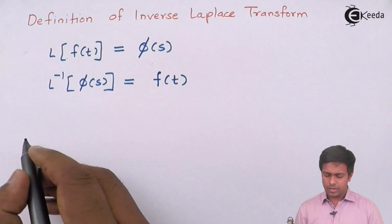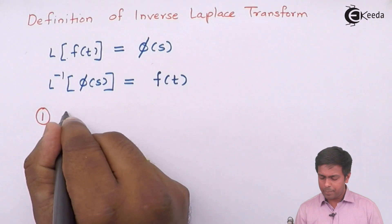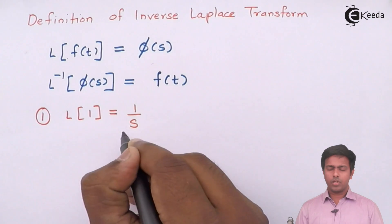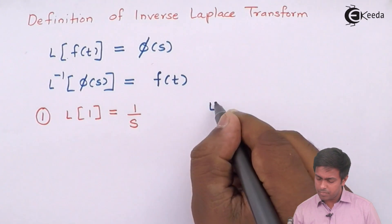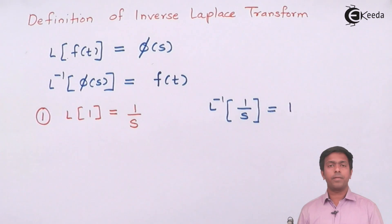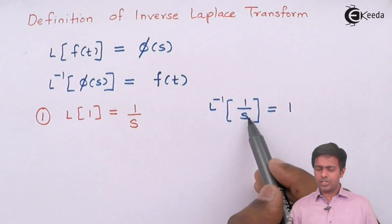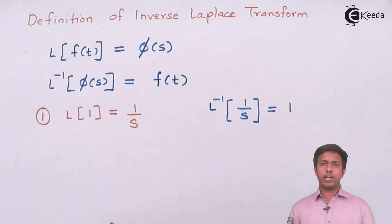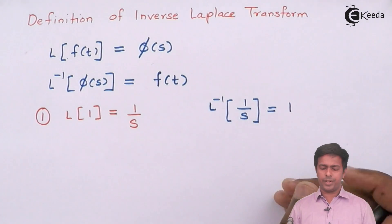Formula number one: we have seen that the Laplace transform of 1 is equal to 1/s. So in inverse Laplace transform, shifting L to the right-hand side, we get the Laplace inverse of 1/s equals 1. One thing to note here is that the function on which we apply the inverse Laplace transform is a function of s, and in return we get a function of t. The constant 1 can be treated as a function of t.